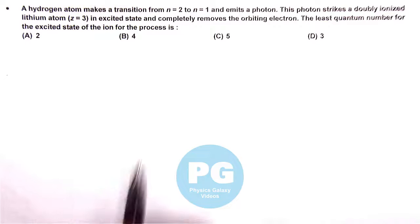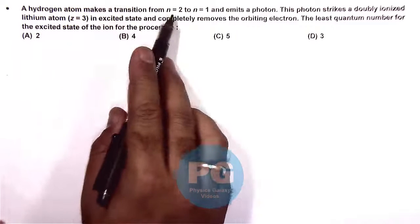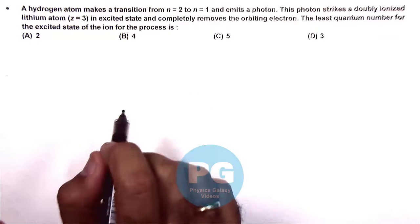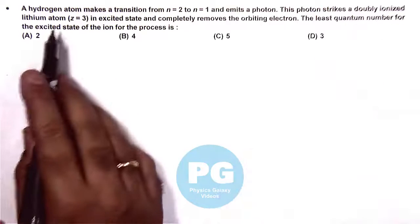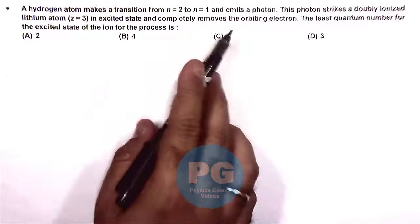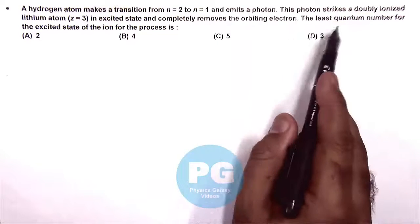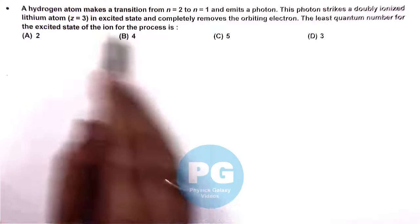In this question, a hydrogen atom makes a transition from n=2 to n=1 and emits a photon. This photon strikes a doubly ionized lithium atom in an excited state and completely removes the orbiting electron. We are required to calculate the least quantum number for the excited state of the ion for this process.